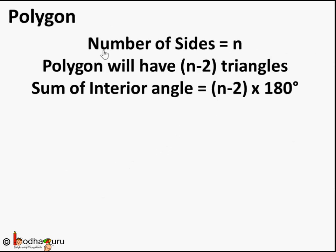The generic formula we learned for the sum of interior angles was: if there is a polygon with n number of sides, then it will have n minus 2 triangles. If we draw diagonals from a given point, the sum of interior angles equals n minus 2 triangles into 180 degrees — the sum of interior angles of each triangle. So the sum of interior angles of a polygon is equal to n minus 2 into 180 degrees, where n is the number of sides.